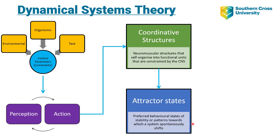The fourth key concept is that this requires complex interaction between multiple levels of the organism — from the molecular level, to the cellular level, to the systems level, to the whole organism level. All of those levels of the organism are self-organised into these non-linear dynamics and into attractor states.